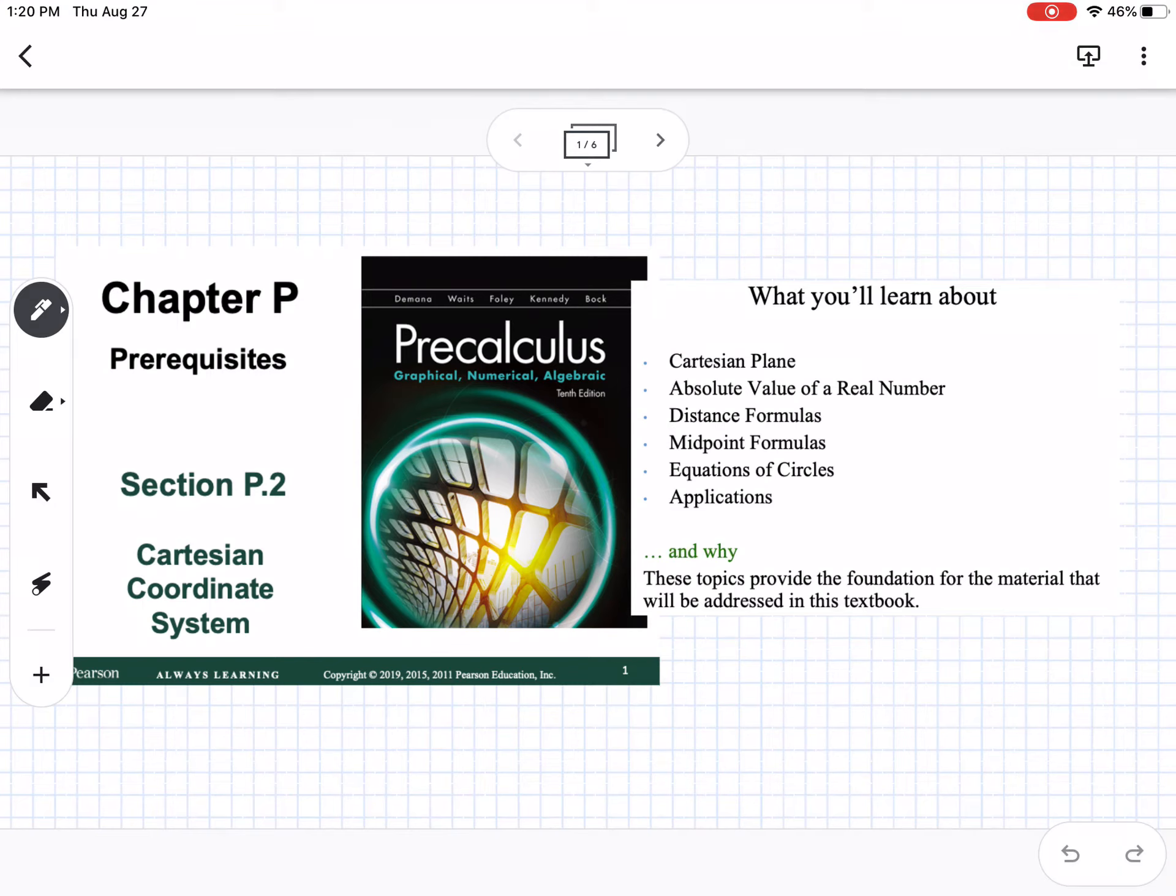Okay, so this is chapter P, section P.2, which is the Cartesian coordinate system. So these are the things you'll learn about: the Cartesian plane, absolute value, distance and midpoint formulas, and the equations of circles.